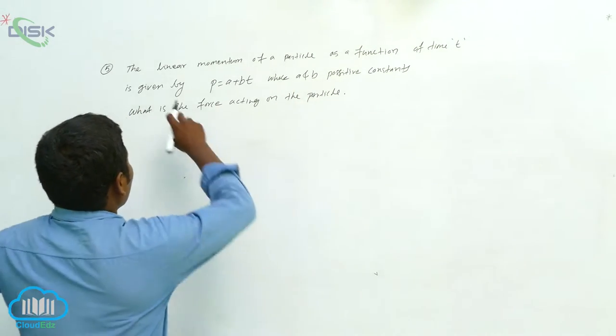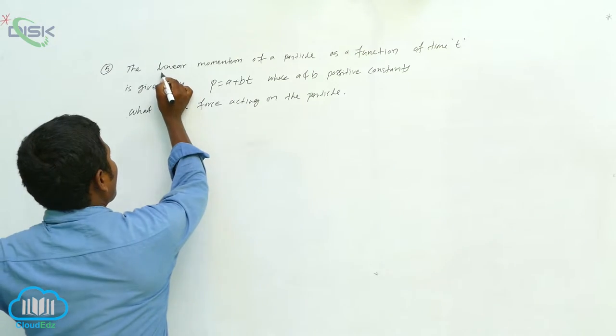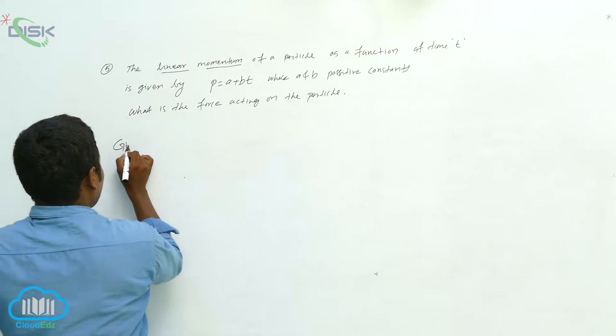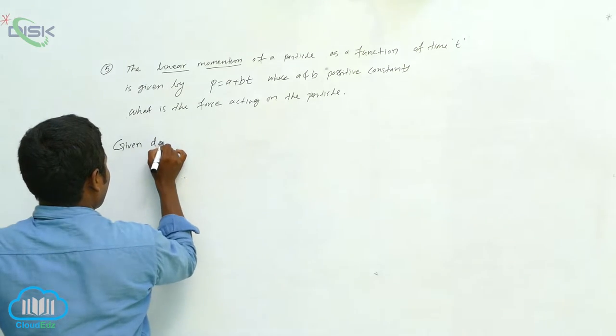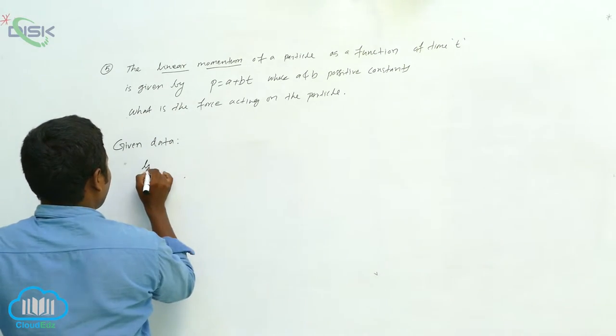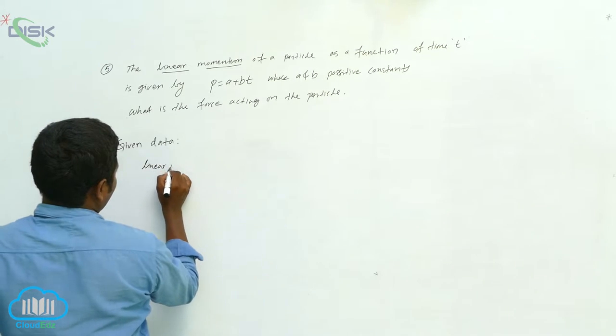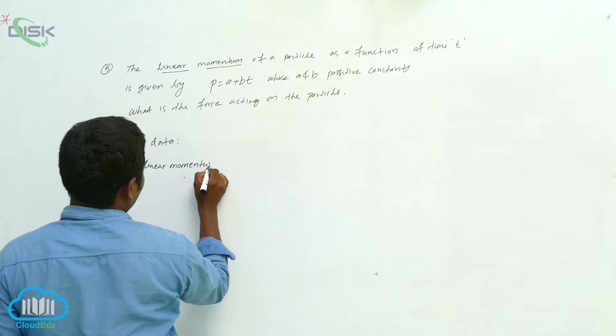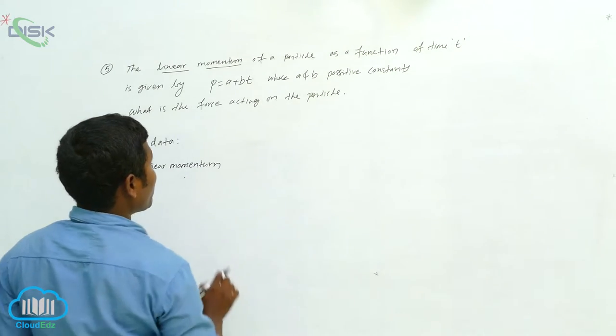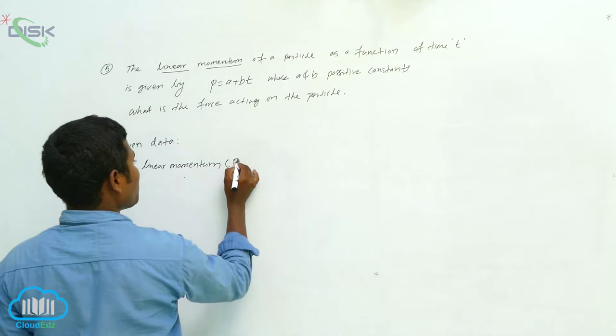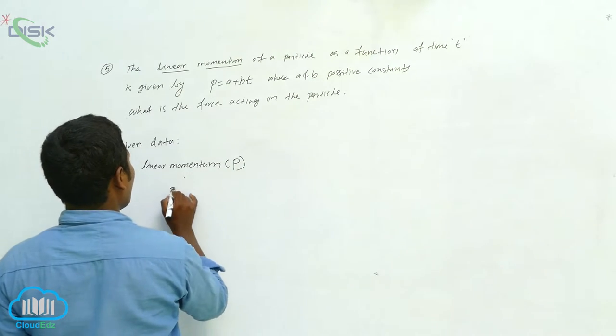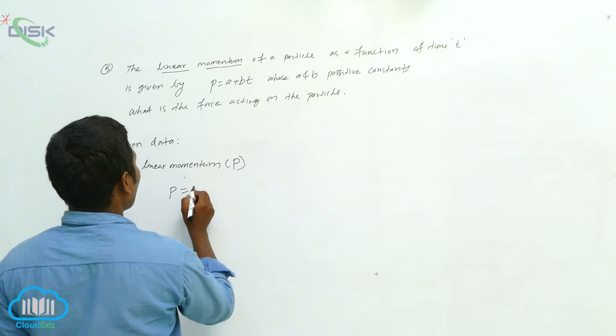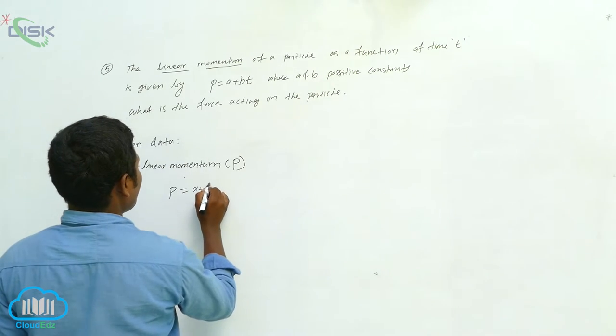Again, it's a question about the linear momentum. Which letter? We have given data. Linear momentum of a particle as a function - linear momentum, which letter are we denoting? P. So p equals what, as a function of time? How much is given? A plus bt.